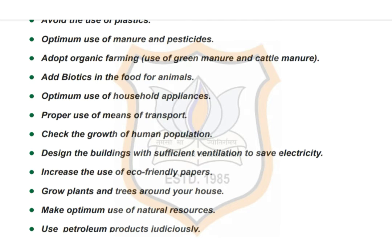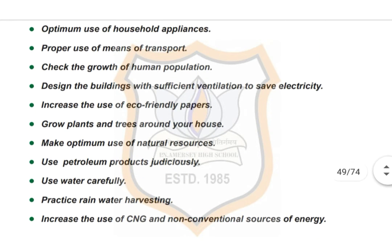Check the growth of human population. Design buildings with sufficient ventilation to save electricity. Increase the use of eco-friendly paper. Grow plants and trees around your houses. Make optimum use of natural resources. Use petroleum products judiciously. Use water carefully and practice rainwater harvesting. Increase the use of CNG and non-conventional sources of energy.